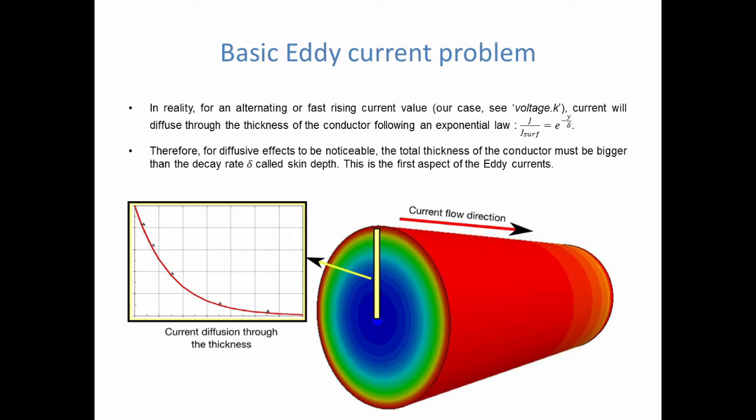So that's the first law related to eddy currents. For diffusion to happen, skin depth must be lower than thickness of conductor. First thing to check.